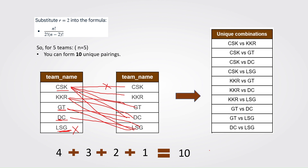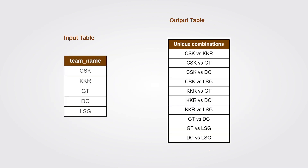One thing to note: if order did matter and we were allowed to count both CSK vs KKR and KKR vs CSK, we would use permutations instead of combinations. But here, order does not matter, so we use combinations. Now let's move on to write the SQL query in MySQL Workbench.